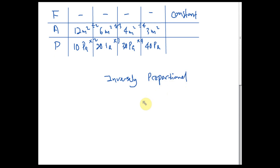So this is what directly proportional and inversely proportional mean. If force increases, pressure increases — that is directly proportional. But if the area increases, the pressure decreases — that is inversely proportional. The area decreases by 2 times, the pressure increases by 2 times — inversely proportional. The force increases, the pressure increases — directly proportional.